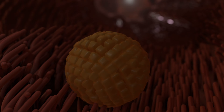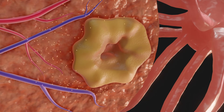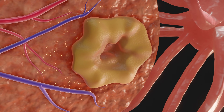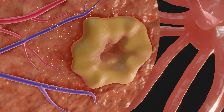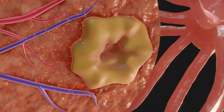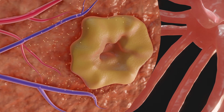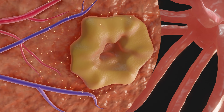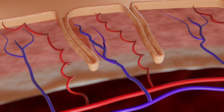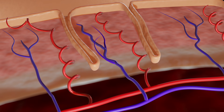The Graafian follicle remaining in the ovary transforms into the corpus luteum and produces plenty of progesterone. Progesterone stimulates further maturation of the uterine lining. Spiral arteries develop and the uterine lining prepares for the implantation of an embryo.